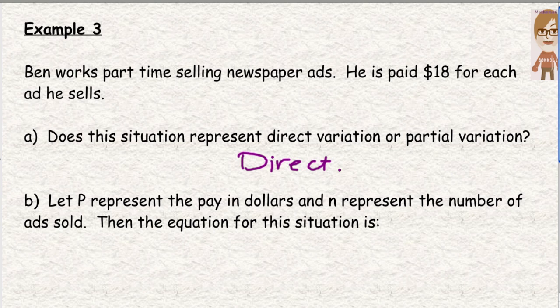It says, let P represent the pay in dollars and N the number of ads sold. Then the equation for this situation is his pay equals, he's paid $18 per ad. The number of ads is N. $18 per ad. So we would just do 18N. If he sells 5 ads, you'd sub in 18 times 5. If he has 10 ads, you'd have 18 times 10. So this is the rate with the letter beside it because it's $18 per ad. And N is the number of ads.